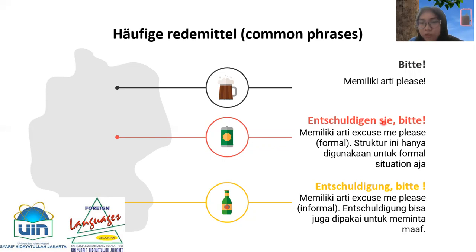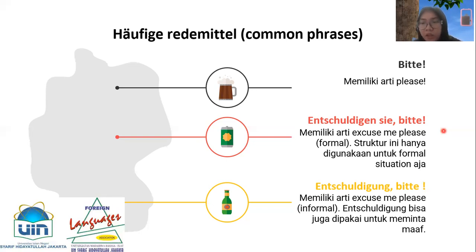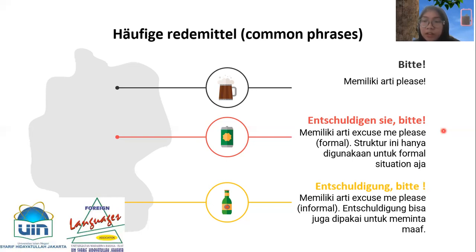'Entschuldigung bitte' — once again: 'Entschuldigung bitte', meaning 'excuse me please', used for formal situations. There is also 'Entschuldige bitte' — once again: 'Entschuldige bitte' — which also means 'excuse me please', but 'Entschuldige bitte' is used for informal situations.